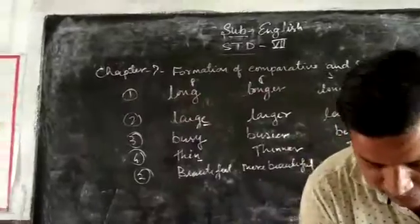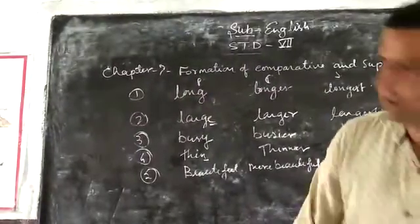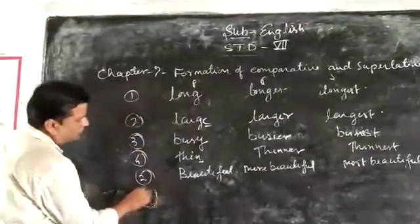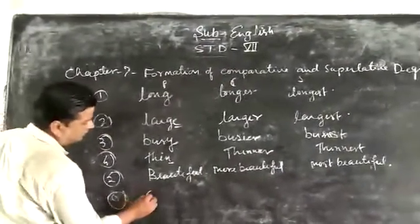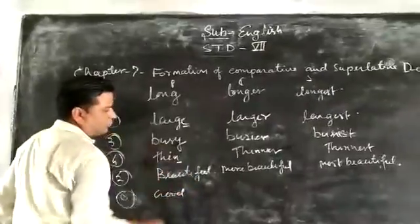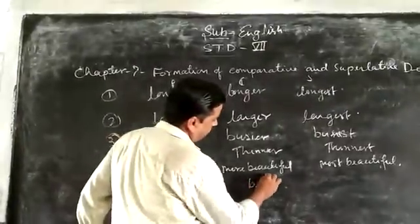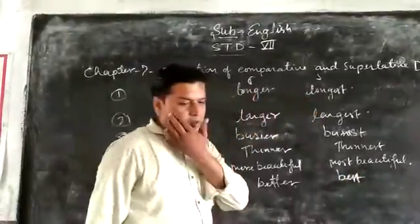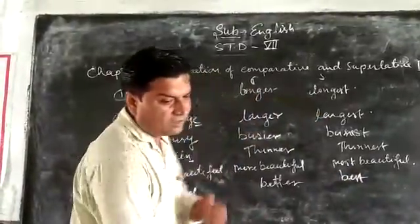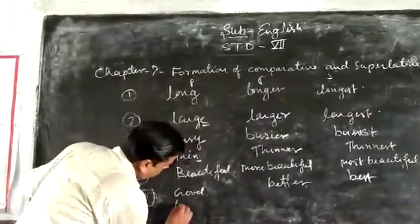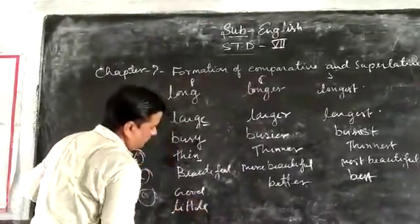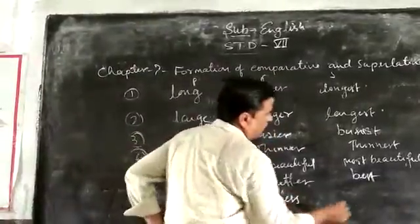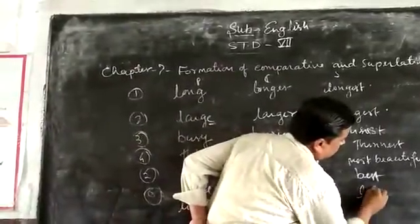There are also some irregular adjective forms. For example, 'little' has the comparative 'less' and the superlative 'least'.